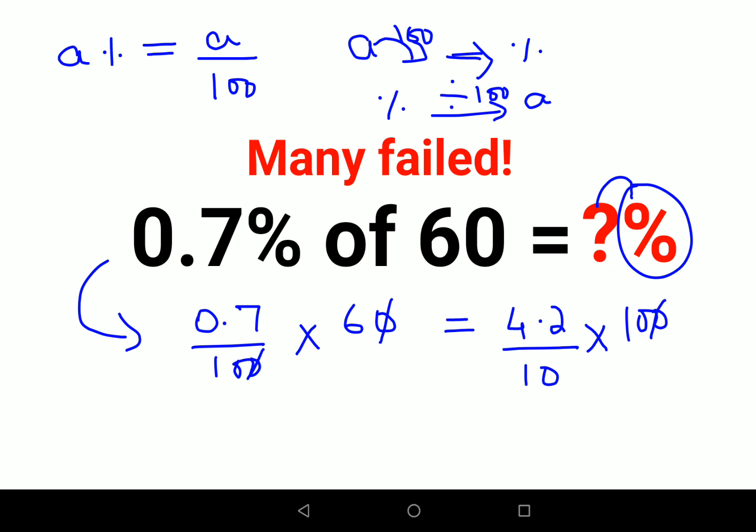So here also the zeros are cancelling. So I can say the answer is 42%. Please understand, a lot of people ignore this sign.